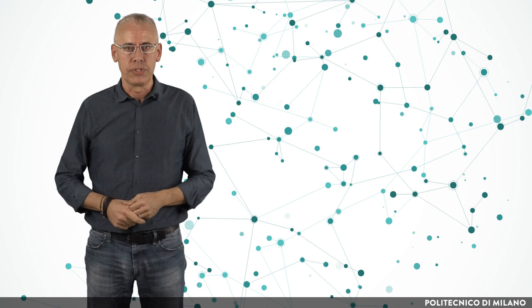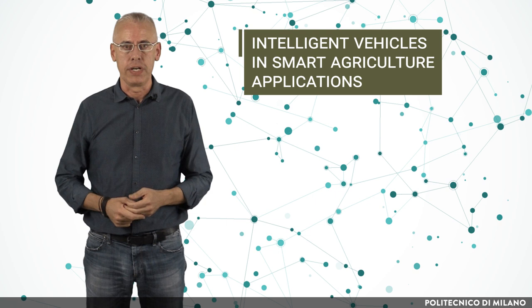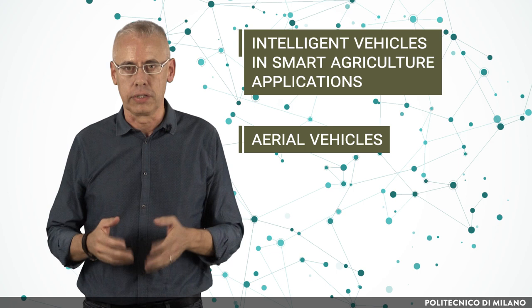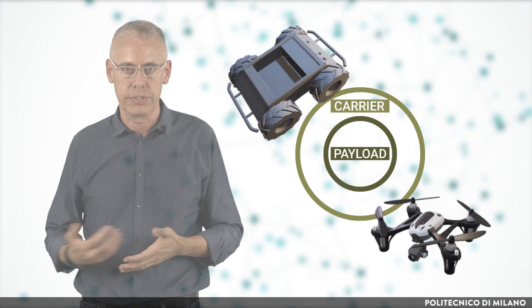The aim of this lecture is to describe the intelligent vehicles used in smart agriculture applications, their functional structure and major characteristics, highlighting the aerial vehicles. After this lecture you will be able to identify the technological building blocks of such intelligent vehicles.